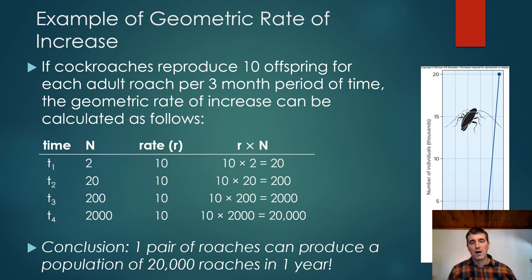Some populations, particularly insect populations, do grow at these exponential or geometric rates for a while. Obviously, this can't happen forever. There's a lot of cockroaches out there. But if this population growth happened forever, at some point, the entire surface of the planet would be covered with cockroaches. And we know that's not true. So something must be happening that helps to restrict population growth at some point.